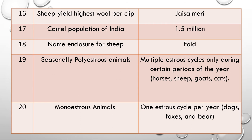Question 18: Name the enclosure for sheep. The answer is a Ford — the enclosure for sheep is called a Ford. Question 19: What is a seasonally polyestrous animal? These are animals with multiple estrous cycles only during a certain period or season of the year. Examples are horses, sheep, goats, and cats.